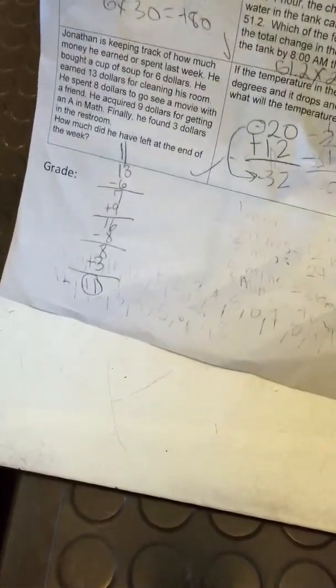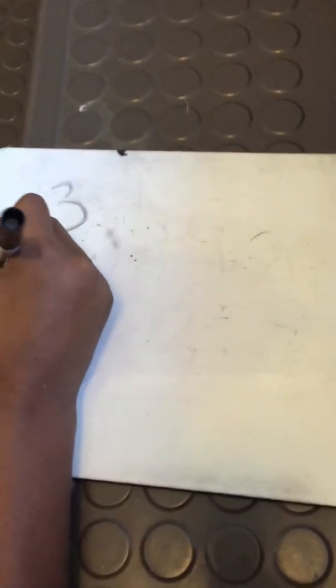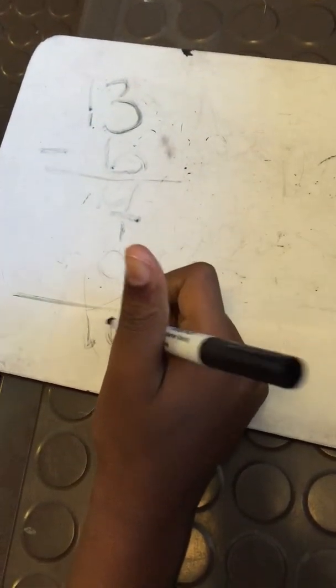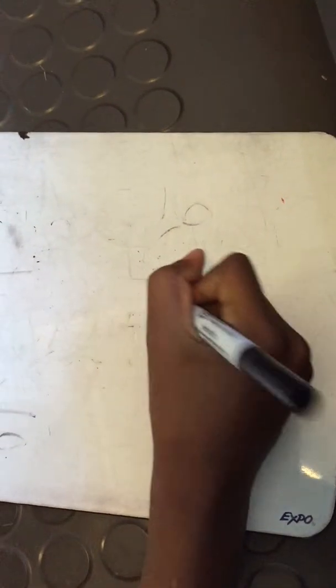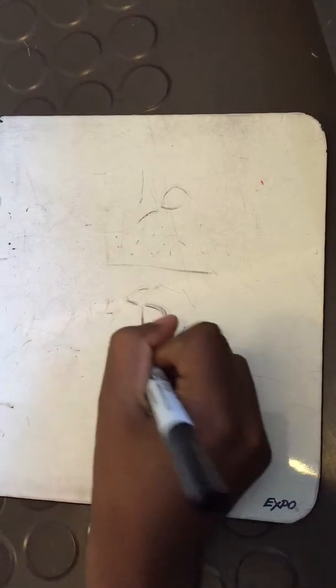Well, you do $13 minus $6, which gives you $7. Then you add $9, that gives you $16. Then you subtract $8. You add $3 and that equals $11. That's how you get your answer.